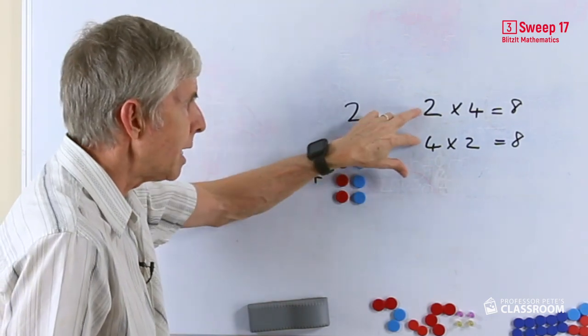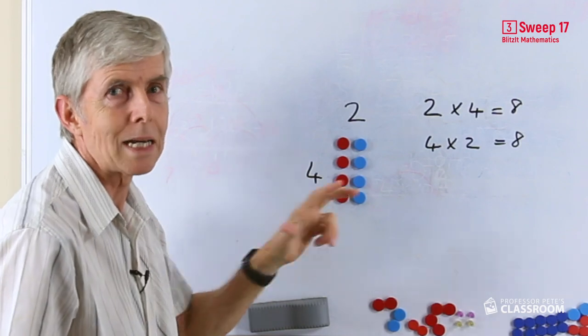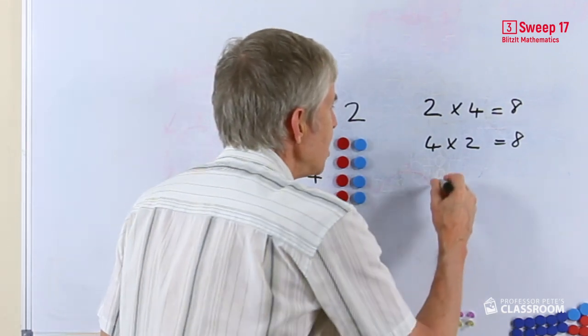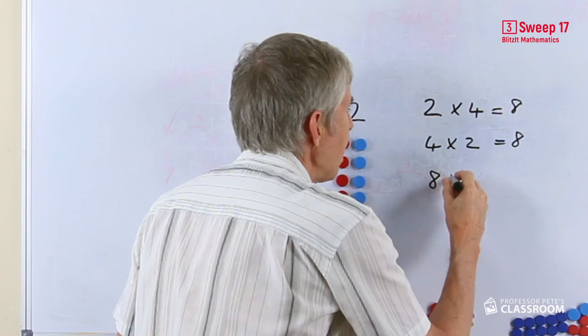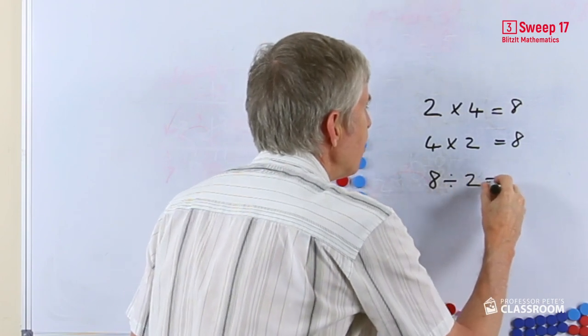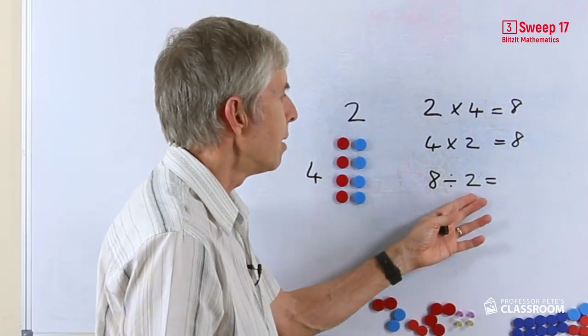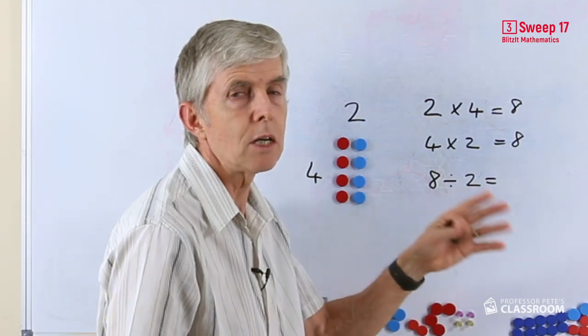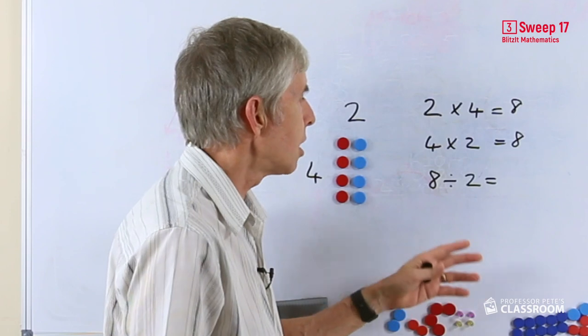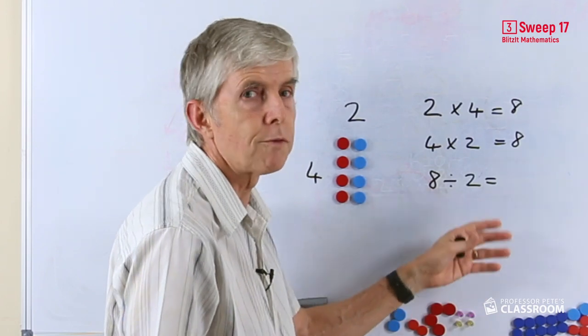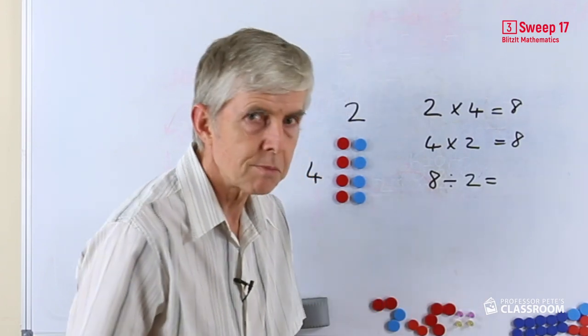So they're two related turnaround number facts but as well as that we can now introduce division and we can say if we have eight and we divide it by two and that has to be explained. Are we talking about dividing into two equal groups or are we talking about dividing it into groups of two? Both are legitimate.